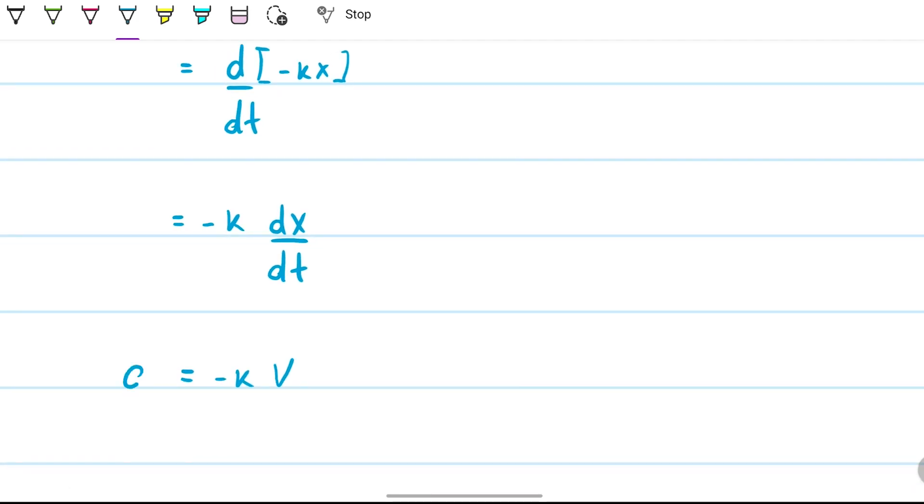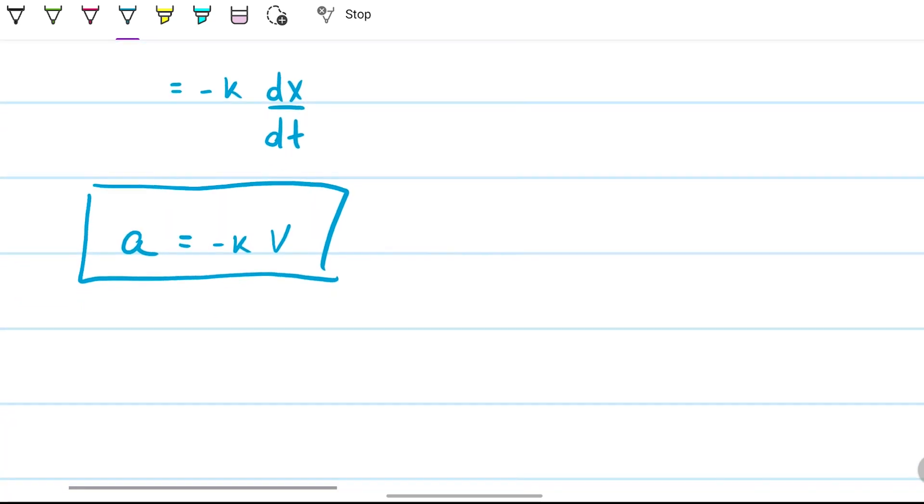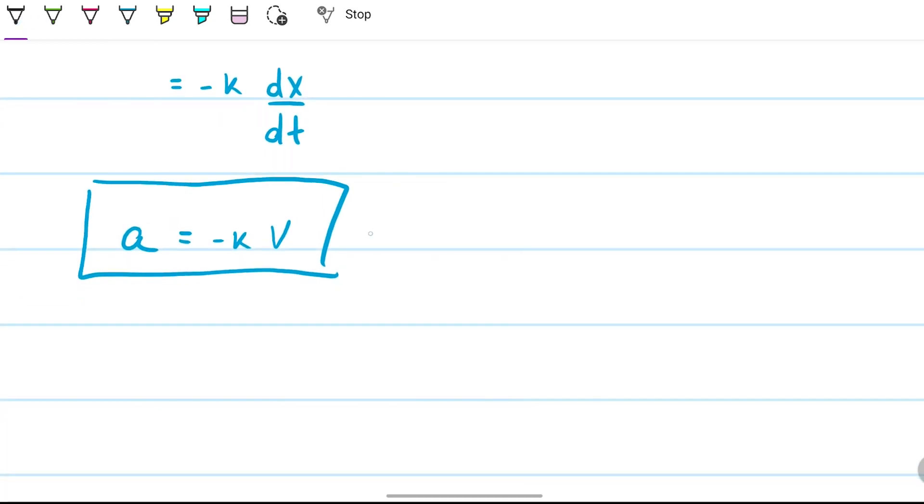Okay, so the acceleration is minus k times the velocity. I know that the velocity when time is zero is 900. So all I need to do is find that k to be able to find the acceleration. So here I'm going to go ahead and use my boundary conditions to be able to find out what I'm looking for.